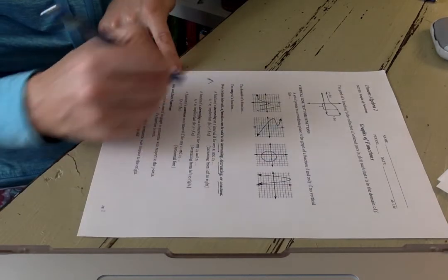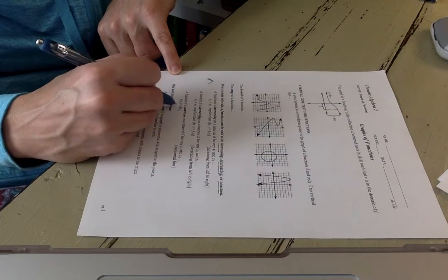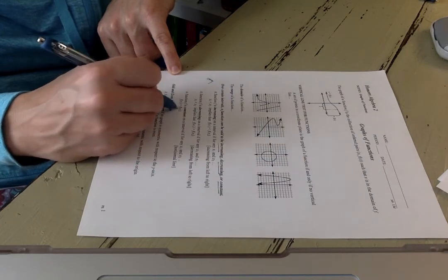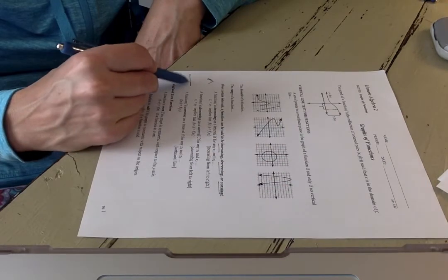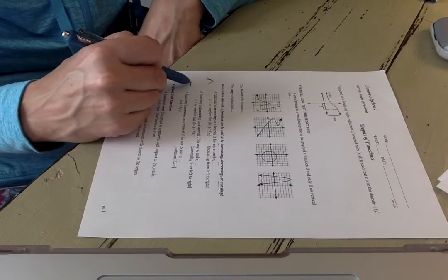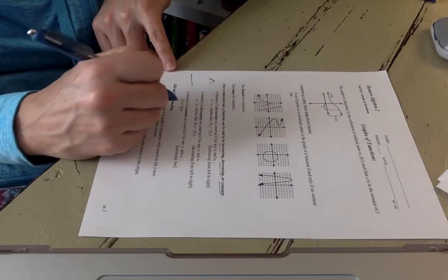If a function is constant, that means the y values at each point are exactly the same. So a constant function would look like this, and the slope at every point here would be equal to zero because it's a horizontal line.